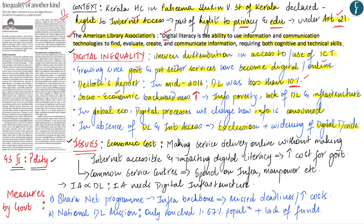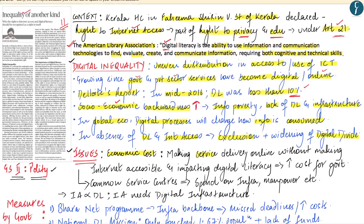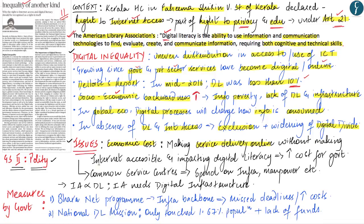As per the author, the government's decision to make governance and delivery of services online without first making internet accessible or improving digital literacy will actually lead to an increase in government expenditure. For example, Common Service Centers established in rural and remote locations are physical centers which help deliver digital government services. However, creating such centers requires the government to spend a lot of money on infrastructure and manpower. So while the government is trying to save resources by making services online, it now has to spend more on Common Service Centers because people are unable to access digital government services.